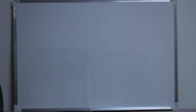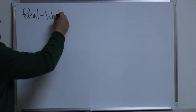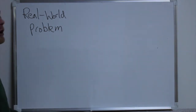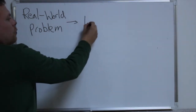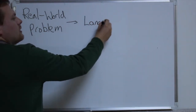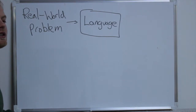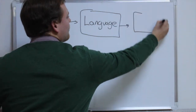One thing that I always try to emphasize to my students is the process through which we make math useful. So let's say we have a real-world problem. What are we going to do to solve this real-world problem? Well, the first step we need to do is actually to turn it into words. This is the language step of our problem-solving process. We need to say exactly what is our problem and what do we know. Next, we translate that into math, of course.